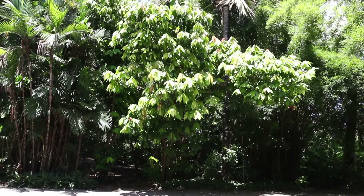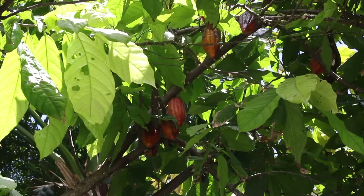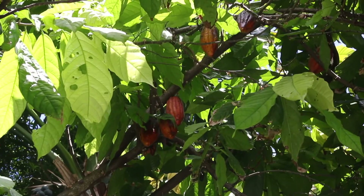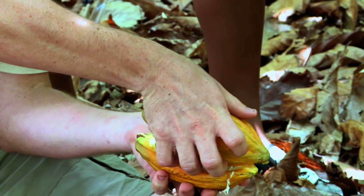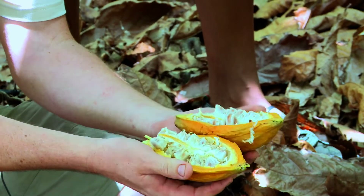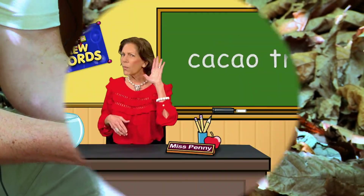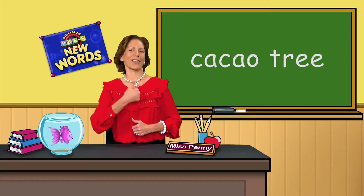Cacao tree. The cacao tree is a tropical tree from South America. It bears fruit from which chocolate is made. What was that word? Cacao tree. Good job.